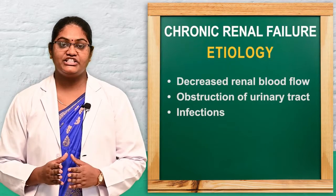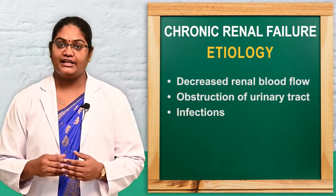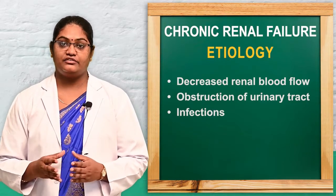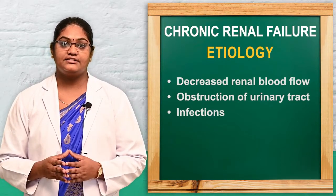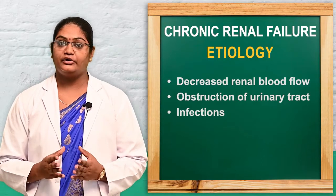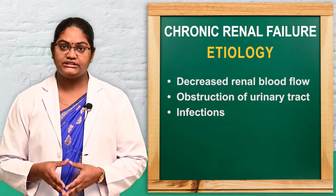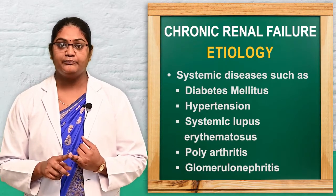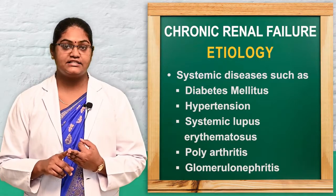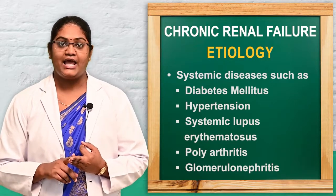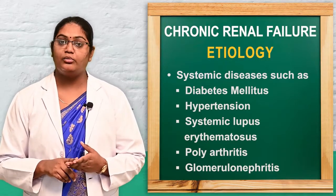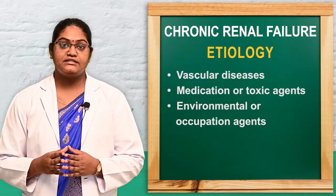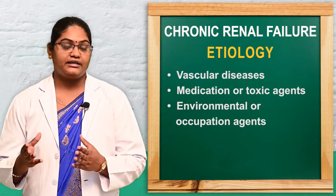We can see what are the main etiology and causes of chronic renal failure. The first one is reduced renal blood flow; the second is any obstruction in the urinary tract; or infections and systemic diseases such as diabetes mellitus, hypertension, SLE — that is systemic lupus erythematosus — polyarthritis, and glomerulonephritis. These systemic diseases may lead to renal failure.